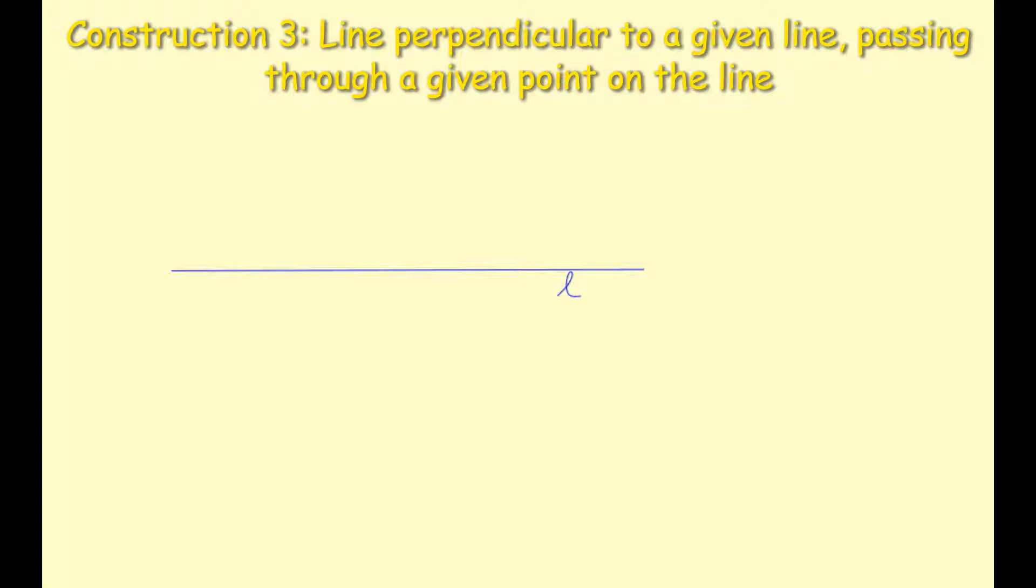Now according to the construction, there is a point on that line L, so I'm going to label a point somewhere on that line, doesn't matter where it is, and I'm going to call it P for a point. So that's my line L constructed and the point P constructed.